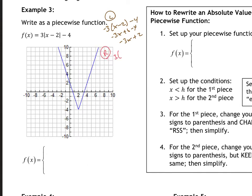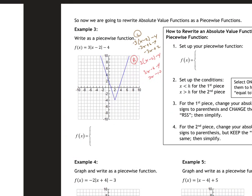For the right side, we're going to keep the sign and simplify: x minus 2 minus 4 becomes 3x minus 6 minus 4, so 3x minus 10. The big thing is for the left side, since we're going the other direction, we flip it. So the left side is negative 3x plus 2 where x is less than or equal to 2, and the right side is 3x minus 10 where x is greater than 2 — that's the x-value of our vertex.